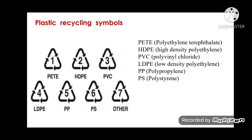Plastic recycling symbols: these symbols are used on plastic materials to indicate the type of plastic. 1 = PET (polyethylene terephthalate), 2 = high density polyethylene, 3 = polyvinyl chloride, 4 = low density polyethylene, 5 = PP (polypropylene), 6 = PS (polystyrene), 7 = other plastic materials.